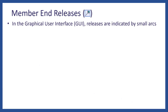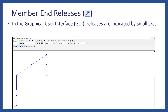Users may assign member end releases in the graphical user interface (GUI) by using the member release tool in the geometry window, which has the icon shown at the top. When assigned to member ends, the releases are indicated by small arcs, as you can see in the screenshot. There is at least one release assigned to both member ends of the beam at the top, and at least one release at both ends of the shorter column on the right. Note that this model uses physical member modeling, meaning the nodes shown are part of the same member. You can turn on the shrink element visual check tool, located at the bottom of the Esprim window in the status bar.